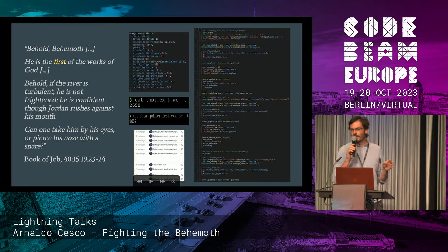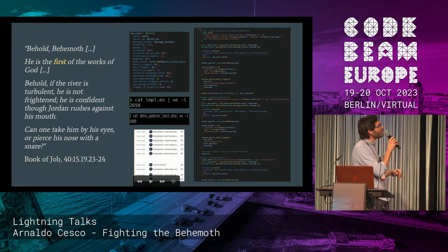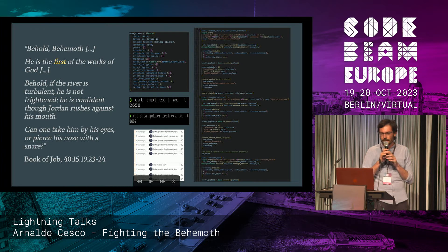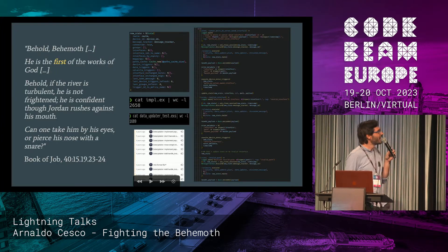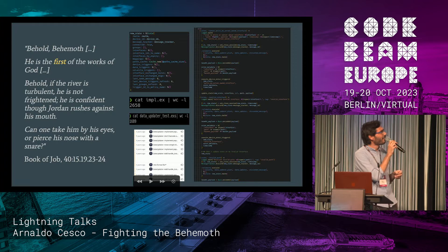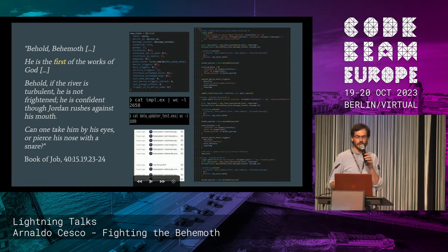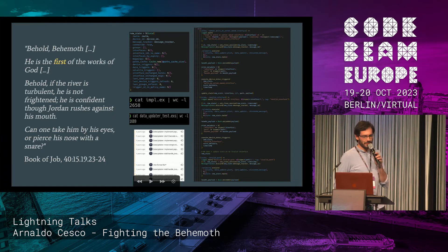What is a behemoth? A behemoth is a creature from the Bible, the Old Testament — essentially a hippo mixed with an elephant, it's so big. He is the first of the works of God according to the Old Testament, and indeed this file I'm talking about is one of the first made for this product. Nothing can frighten the behemoth, and indeed this file is one of the main files of the old product.